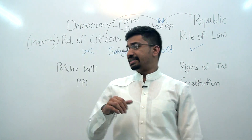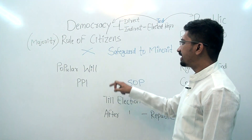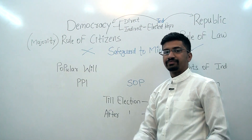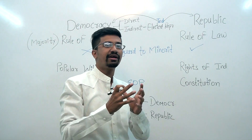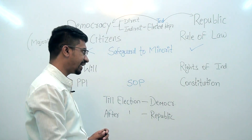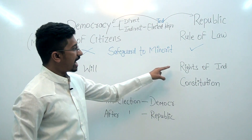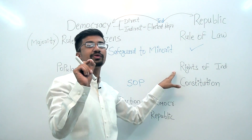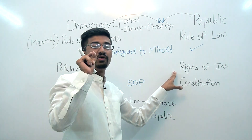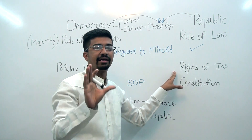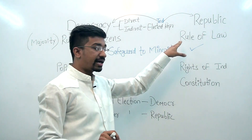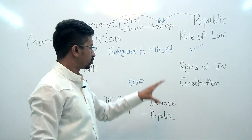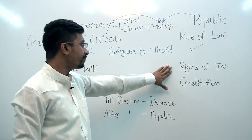Third point — here we talk about popular will. In a democratic country, popular will exists — whatever the majority's popular will is, that is what prevails. Whereas in the republican form of government, the rights of each individual are looked after. Every individual's right is maintained and preserved, because we are abiding by the rule of law — the law of the land — which protects every individual's rights.